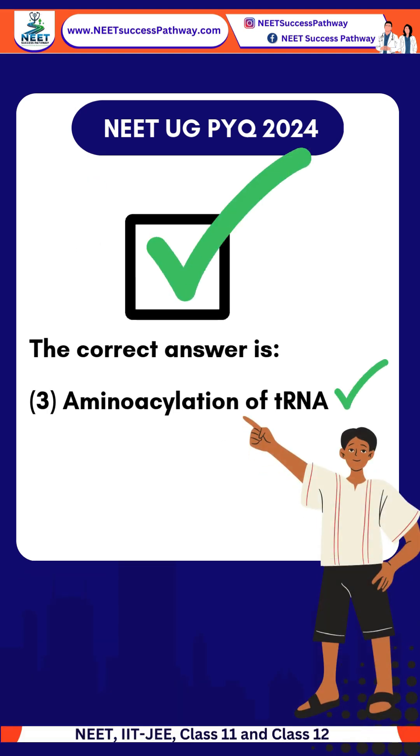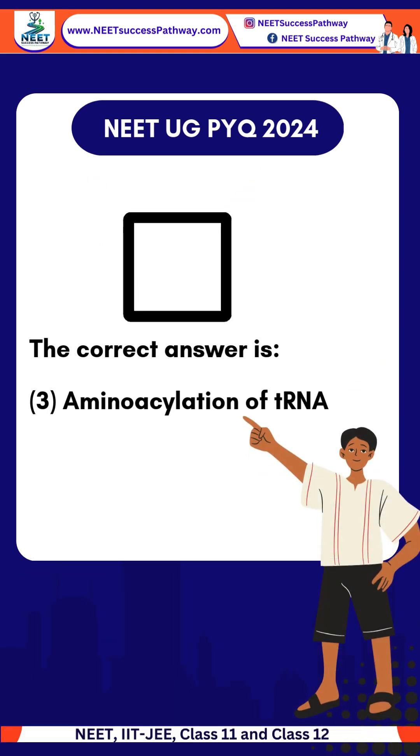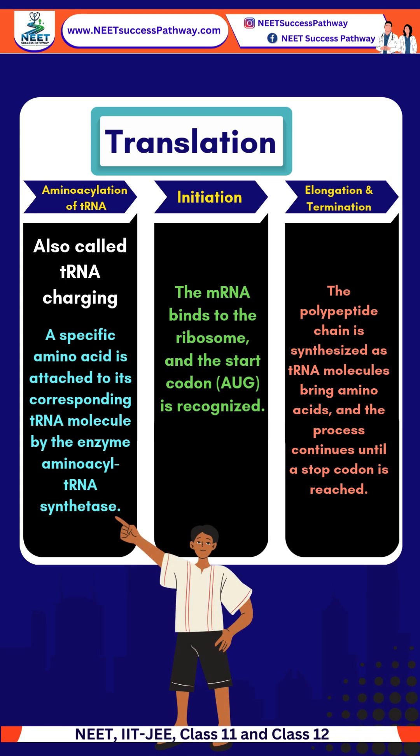The correct answer is amino acylation of tRNA. Translation is an important biochemical reaction, defined as the process of protein synthesis from mRNA, and occurs in three main phases. The first phase is amino acylation of tRNA, also known as tRNA charging. The second phase is initiation, and the third phase is elongation and termination. The first phase involves the attachment of a specific amino acid to its corresponding tRNA molecule by the enzyme aminoacyl-tRNA synthetase.